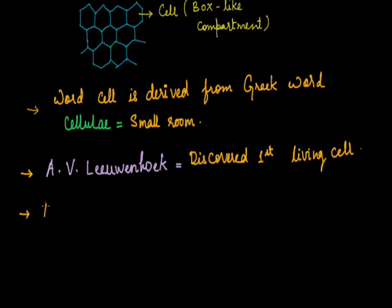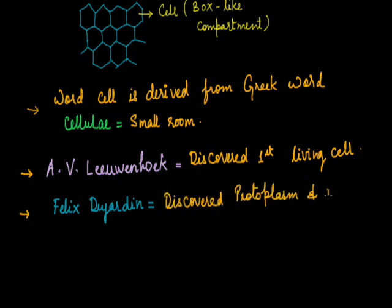And protoplasm can be defined as the cell without cell membrane, or everything which is present inside a cell. Except the cell membrane is called as protoplasm. And protoplasm was discovered by Felix Dujardin, but he called it as sarcode. The actual term protoplasm was coined by Purkinje in 1839.